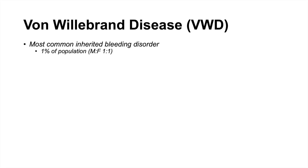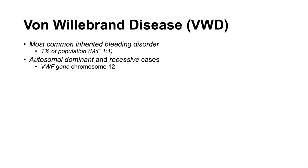It is inherited through autosomal dominant and autosomal recessive depending on the type of von Willebrand disease. The von Willebrand factor gene, or VWF gene, is the culprit and is located on chromosome 12.